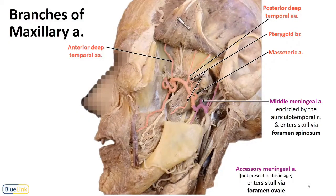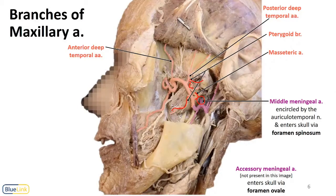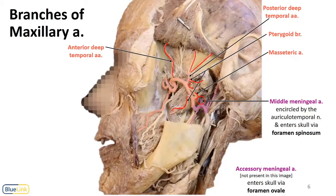This donor does not have an accessory meningeal artery — there you go for variation. But we do see a middle meningeal running right up there, the cut masseteric artery, and we see multiple branches to pterygoid muscles. The pterygoid branches include one coming off of this posterior deep temporal and one coming directly off of the main trunk of the second part. Here we see a nice anterior deep temporal — you'll see these pass deep and superior to get to the temporalis muscle. And not labeled, but you can follow this one here: it runs right along with this nerve, and that's the buccal artery and the buccal nerve.